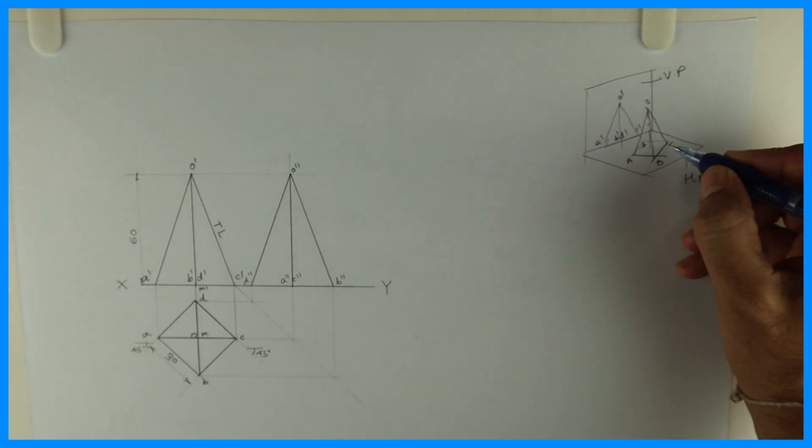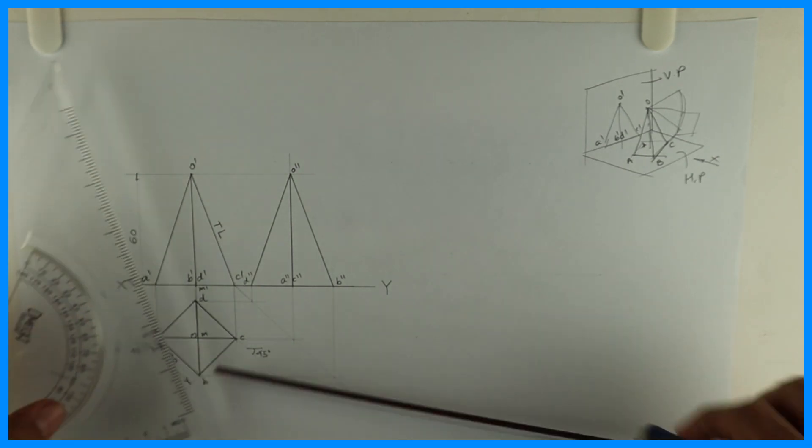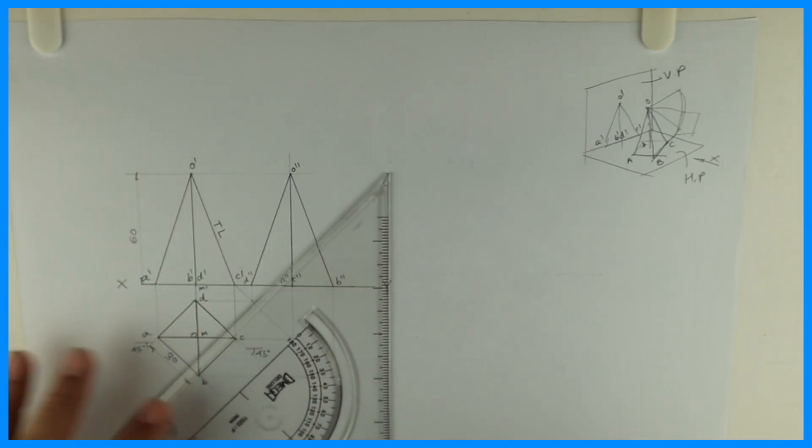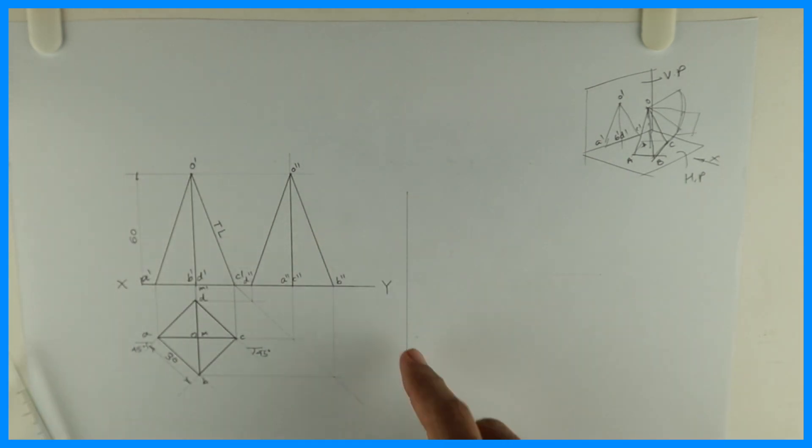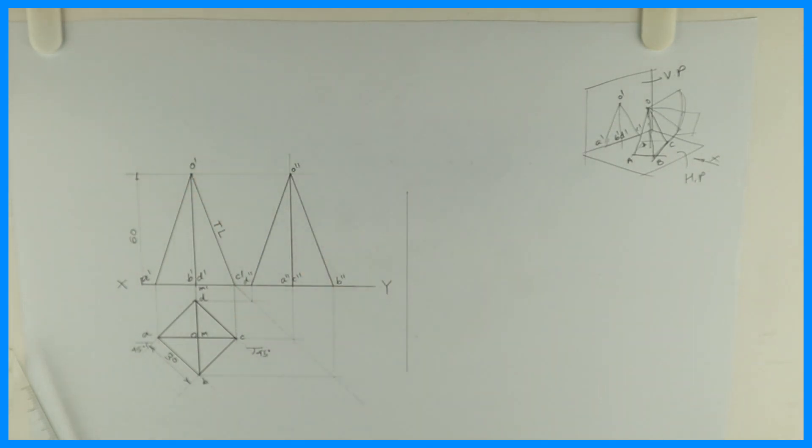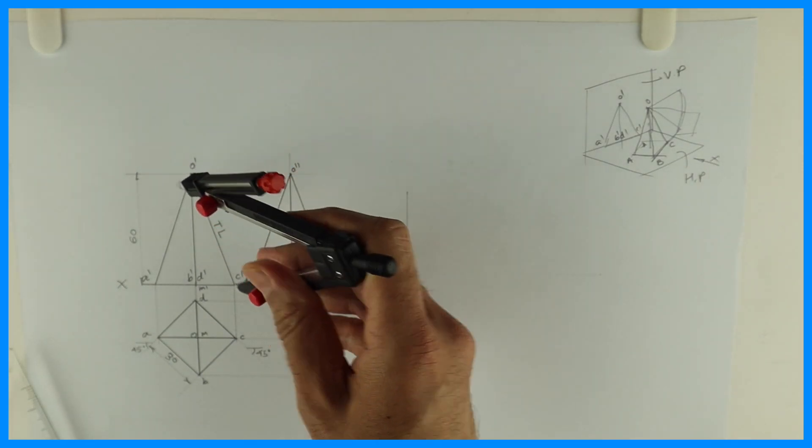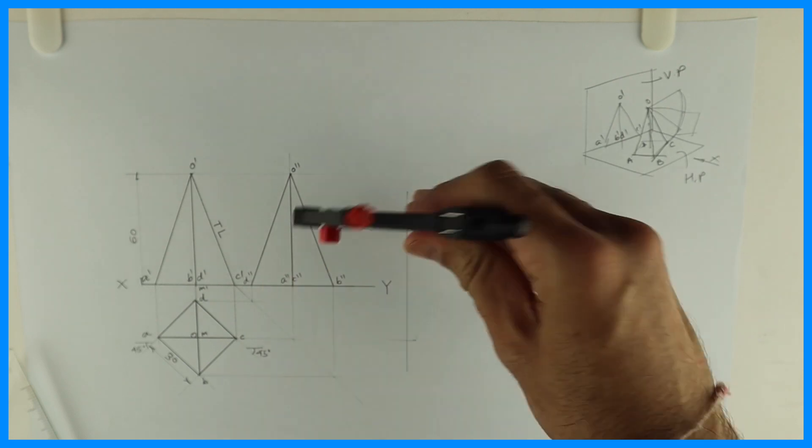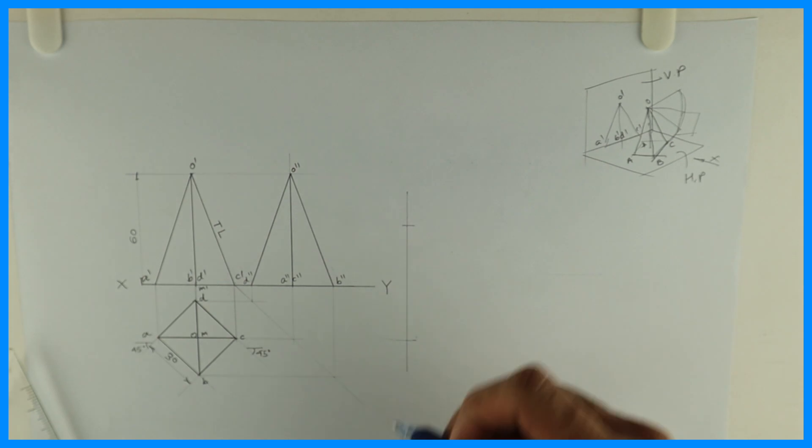See this, now we have to draw development. So what do you mean by development? When you open it, how it will look? It will look like this. See this, with a square. So for this we required true length, which is in our case it is O dash C dash. You draw one vertical line, then take O dash to C dash. See, you can rotate from here, you can draw parallel, but this is how I prefer. I prefer drawing one vertical line. Then I'll take O dash to C dash. And I'll cut it outside. So this is true length. And then I'll rotate.